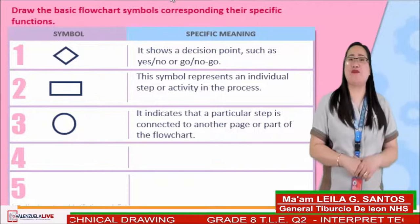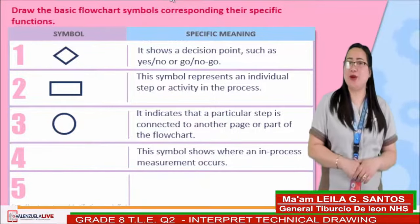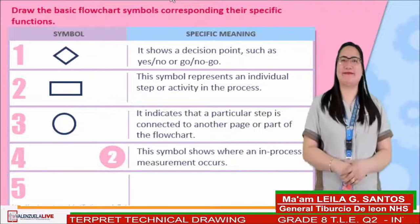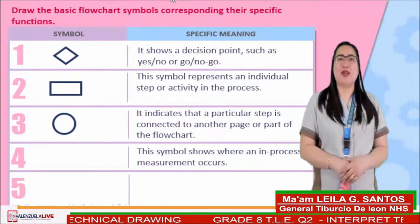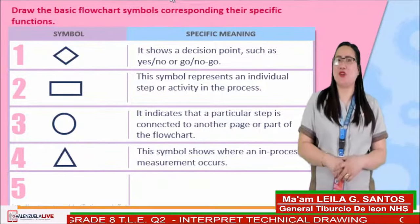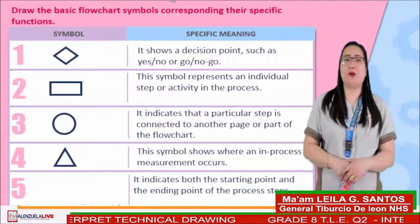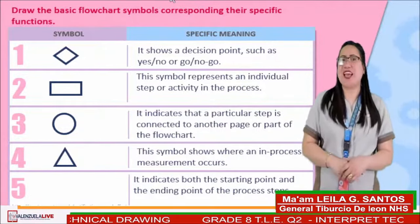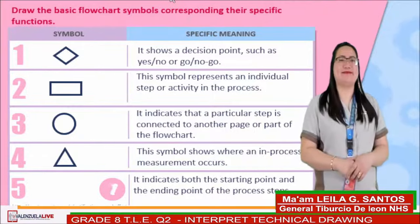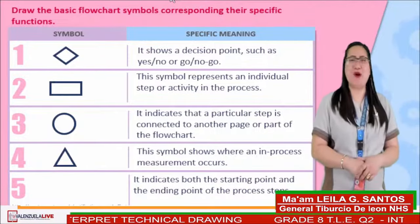Next, item number 4: This symbol shows where an in-process measurement occurs. Time's up! Did you draw a triangle symbol? Great! That is correct! How about item number 5: This indicates both the starting point and the ending point of the process steps. Time's up! If you drew an oval symbol — wonderful! That is correct!